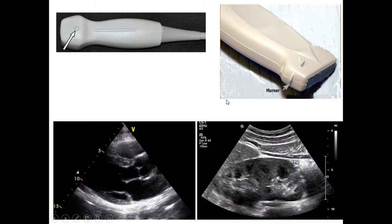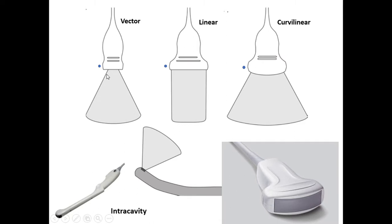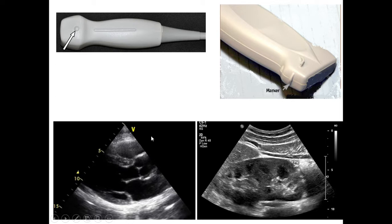At one side of the longest edge of the probe tip, there is a marker — depending on the vendor it can be a ridge, knob, groove, or LED light. Meanwhile, on the monitor image there is also a marker, which can be a letter or symbol. The machine tells us that the marker side of the image will show on a specific side of the monitor. For example, on one image the marker side will show on the right of the monitor, and the other side to the left. On another setting, the marker side will show on the left side of the monitor.